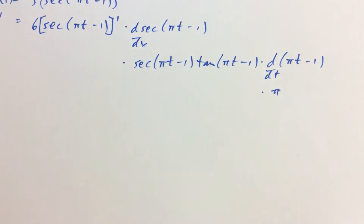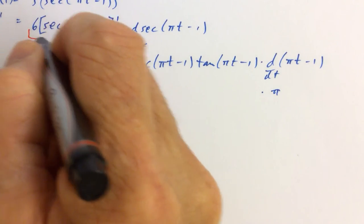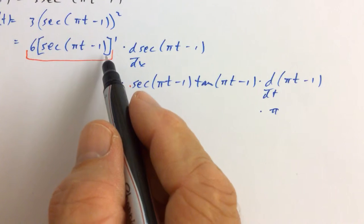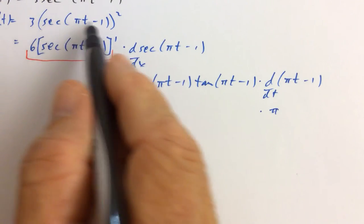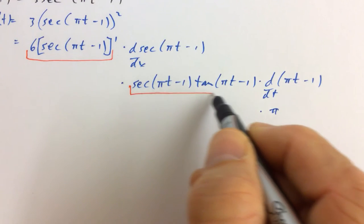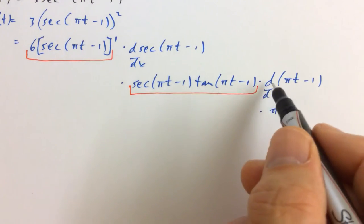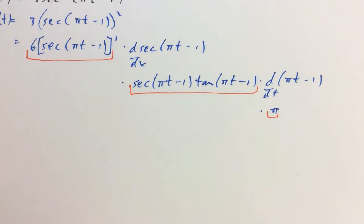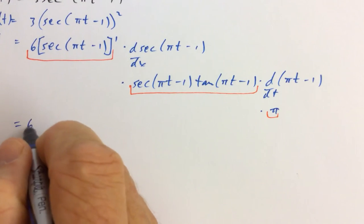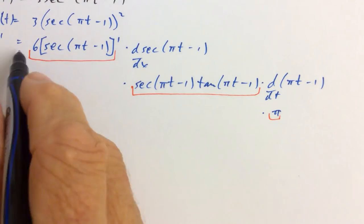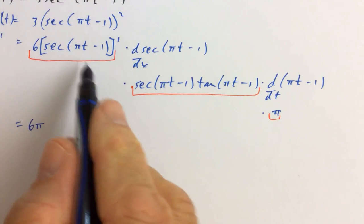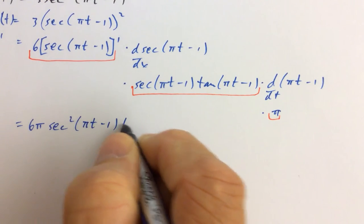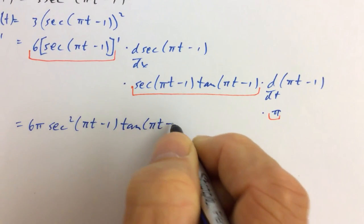So combining all of it: the power rule part, times the derivative of the secant which is secant tangent, times the derivative of whatever you're taking the secant of, which is just π. And when you combine all of those, you get 6π. And then we have secant of that times secant of that, so it's secant squared of (πt − 1) times the tangent of (πt − 1).